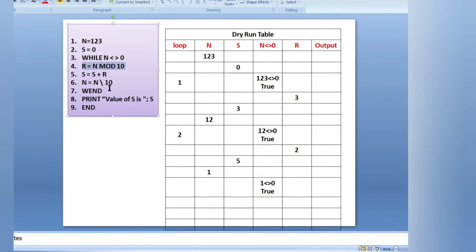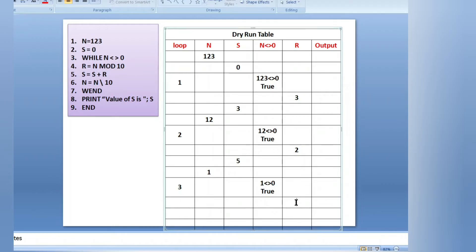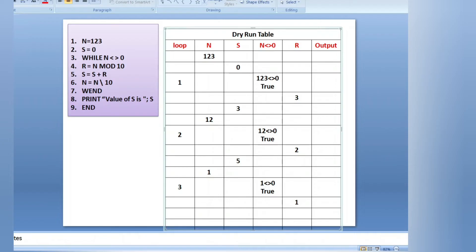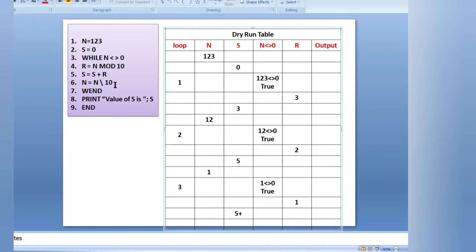This is the third loop. Condition true, so we go inside. r equals to n mod 10: n is 1, so 1 mod 10 — any number mod 10 extracts the last digit. We have only 1, so value of r is 1. Then s equals to s plus r: latest s is 5, r is 1, so 5 plus 1 equals 6 — value of s is 6.